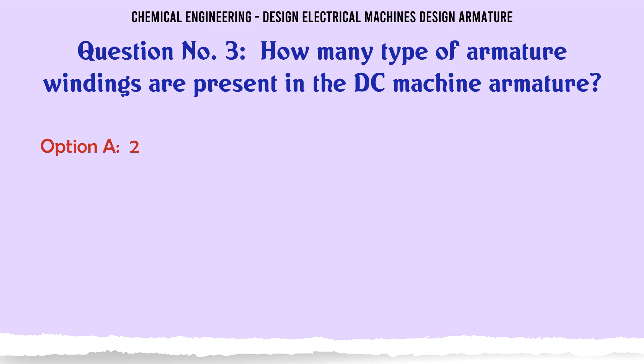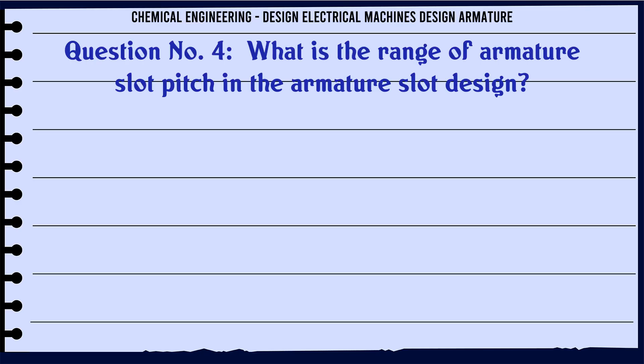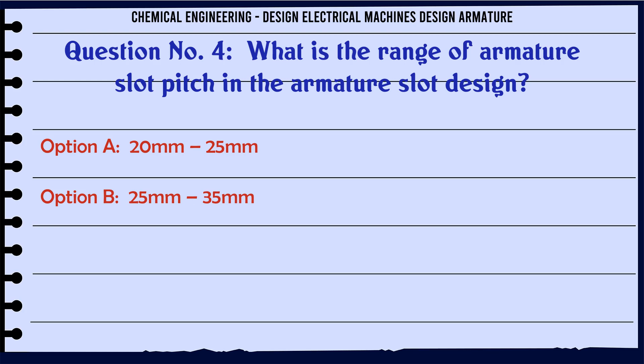How many types of armature windings are present in the DC machine armature? Options: a) 2, b) 3, c) 4, d) 5. The correct answer is 2.